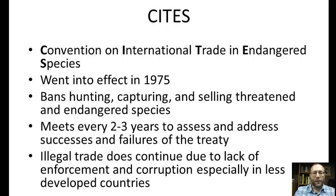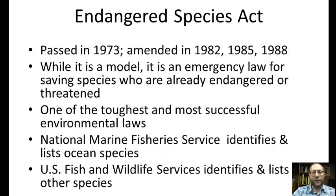In the United States we have the Endangered Species Act, passed in 1973. It does fulfill the CITES Treaty and actually goes well beyond it. It is one of the toughest and most successful environmental laws, but it is essentially an emergency law because it only helps species that are already threatened or endangered. If a species isn't listed, the Endangered Species Act does not help them. Two U.S. government services are involved: the National Marine Fisheries Service identifies and lists ocean species, and the U.S. Fish and Wildlife Service does that for all other species.